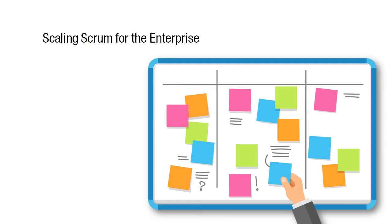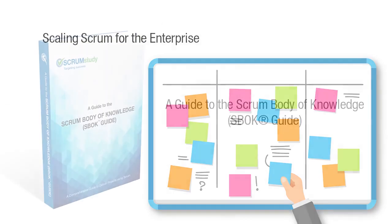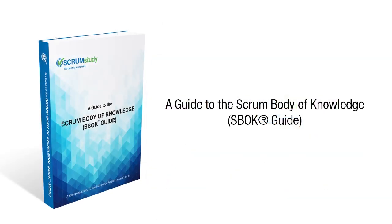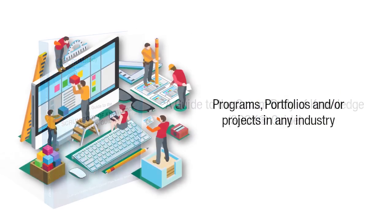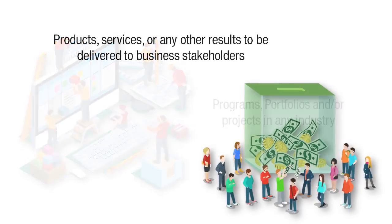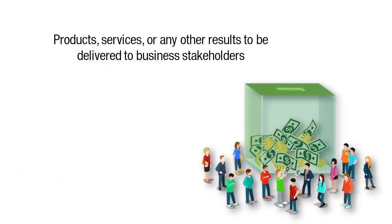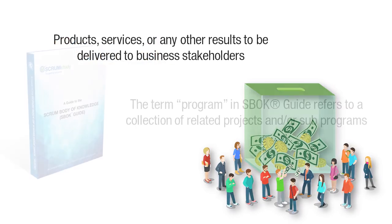Scaling Scrum for the Enterprise, as defined in a Guide to the Scrum Body of Knowledge, or SBOK Guide, is applicable to the following: programs, portfolios, and/or projects in any industry; products, services, and any other results to be delivered to business stakeholders.